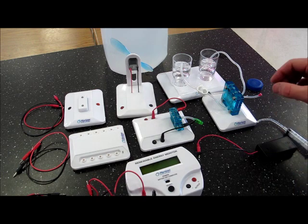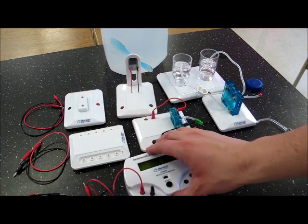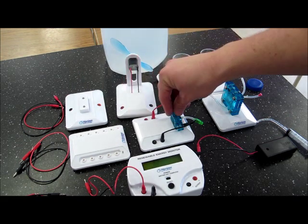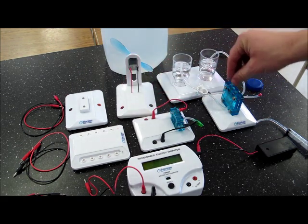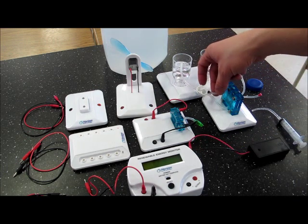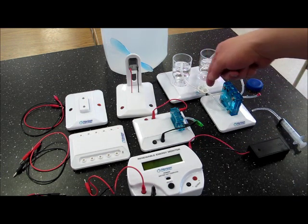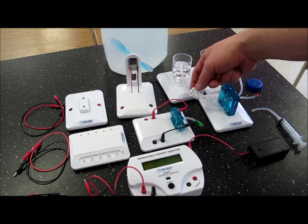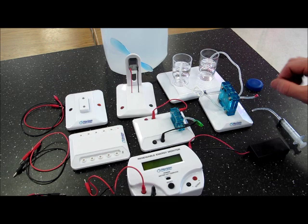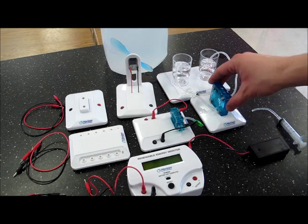When you're done at the station, please try to set everything up how you found it. Again, the monitor, the connector, the LED, the fan, the hydrogen fuel cell, the electrolyzer, your containers here, the battery, and your syringe. Making sure again that your black is on this side, red is on this side, that's connected and open for the next group, and the tube is connected here so that when they get to it, it's the same as how you found it.